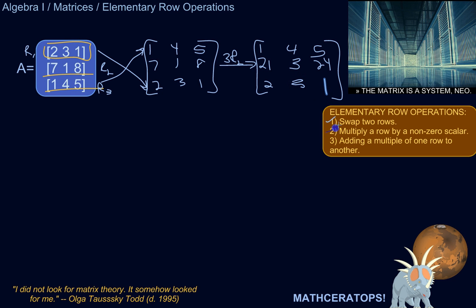All right. Now, let me actually rewrite the matrix as it is so far over here. So the first row one, four, five, and then we've got 21, three, and 24.